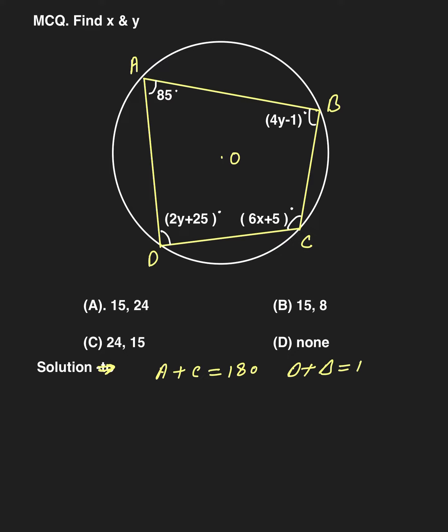Angle A plus angle C: A is 85 degrees, C is 6x plus 5 degrees, equals 180.